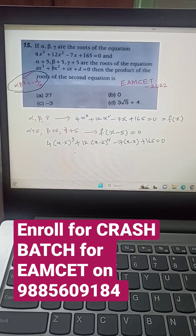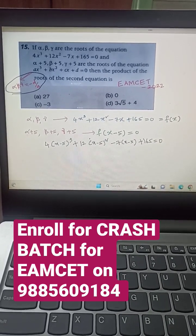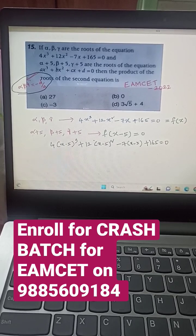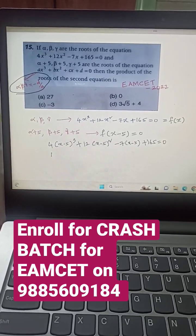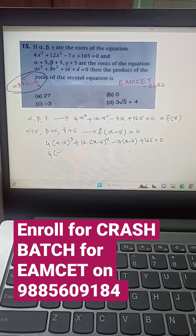Because we are going to find the product of the roots for the given equation, which is minus d by a. What will be the constant? 4 into minus 5 whole cube minus 125, plus 12 into 25, minus 7 into minus 5 plus 35, plus 165.